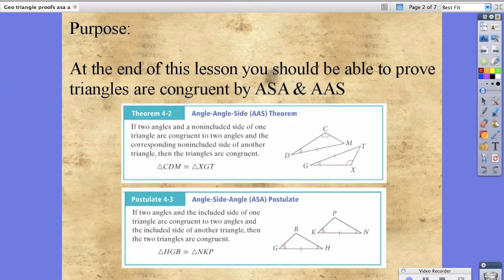In postulate 4.3, the angle-side-angle postulate, it states that if two angles and the included side of one triangle are congruent to two angles and the included side of another triangle, then the two triangles are congruent.